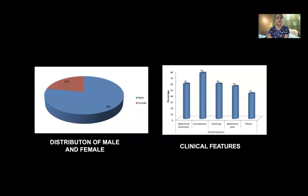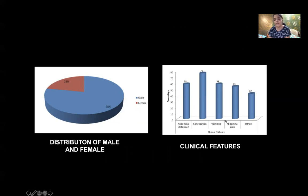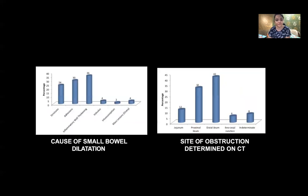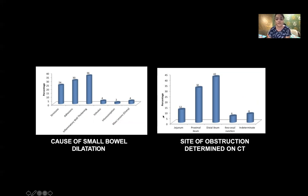The pie charts show the distribution of males and females in the study. Males comprise 78% of cases and females only 22%. The most common clinical features presented were abdominal distension, constipation, followed by vomiting, abdominal pain, and some other features. The most common causes of small bowel dilatation were inflammatory wall thickening and adhesions, followed by strictures, with very few cases involving volvulus, intussusception, and a few cases of ovarian mass lesions.